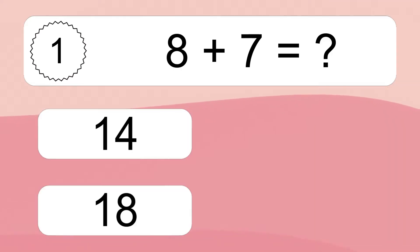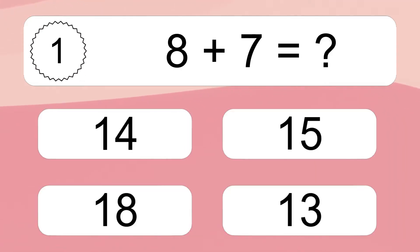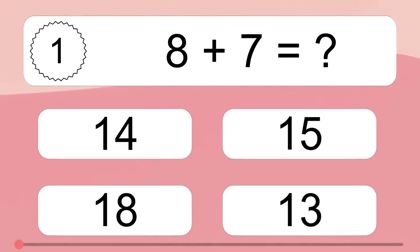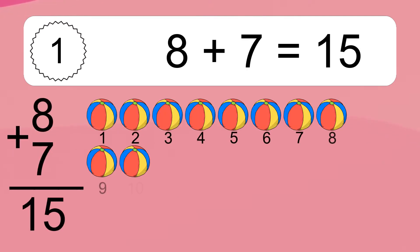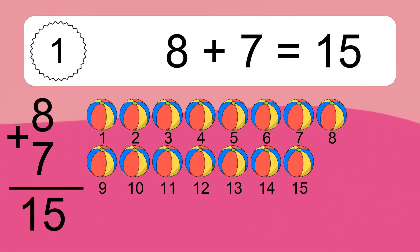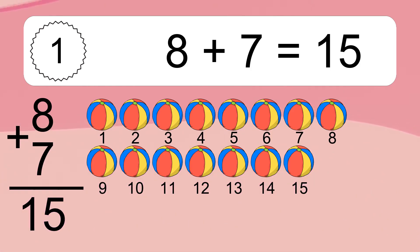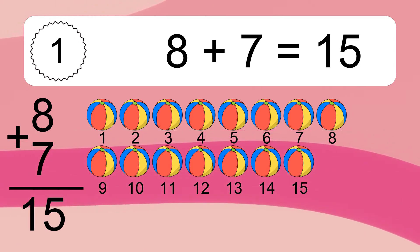8 plus 7 equals what? 8 plus 7 equals 15. Let's count it: 1, 2, 3, 4, 5, 6, 7, 8, 9, 10, 11, 12, 13, 14, 15.